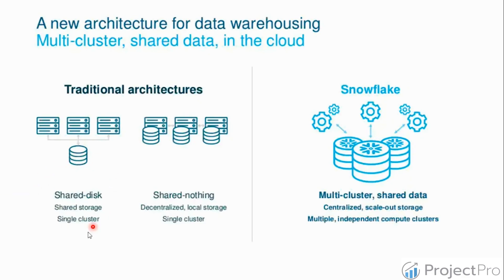The first traditional architecture is shared disk architecture, in which we have one storage disk and multiple compute clusters. All those compute clusters access the same disk and are also linked to each other, forming a single cluster with shared storage.